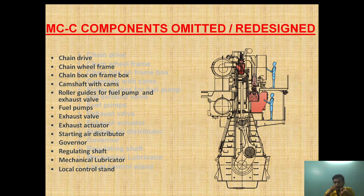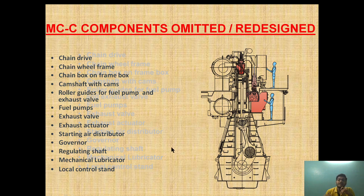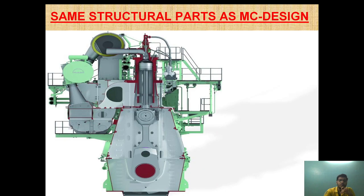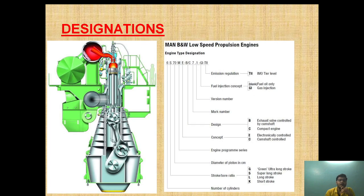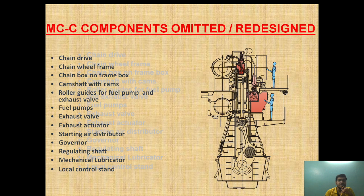In MMU Class 4 exams, if they ask what modifications were done to the ME engine and what was replaced, you should state that the chain arrangement was replaced with a gearbox arrangement, the cam and exhaust valve system was replaced with an SCU unit, and the starting air distributor, regulating shaft, and mechanical lubricator were replaced with a CCU unit. That is how the ME engine designation and modification should be explained.